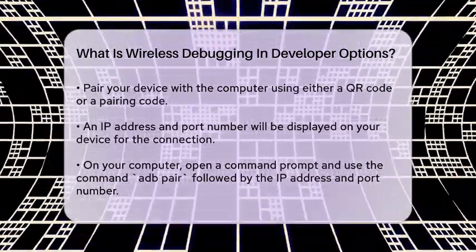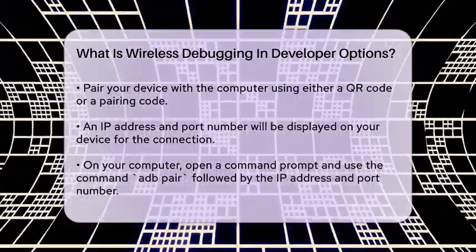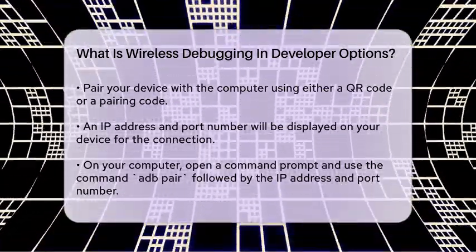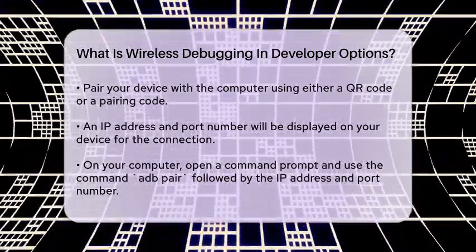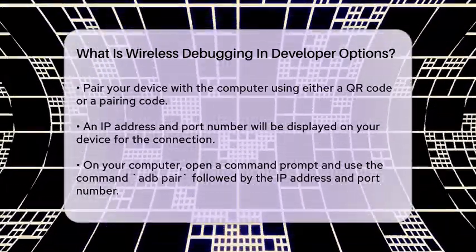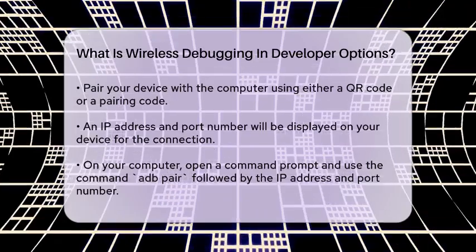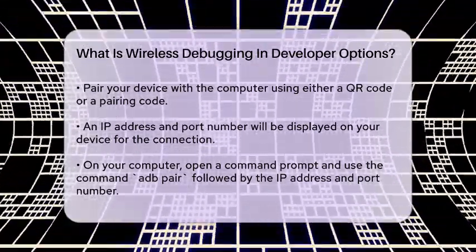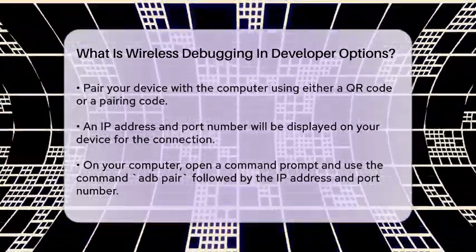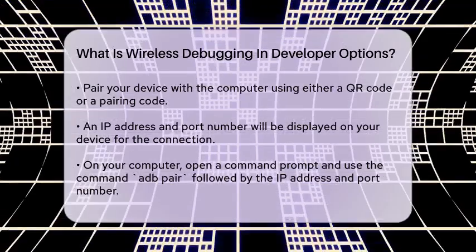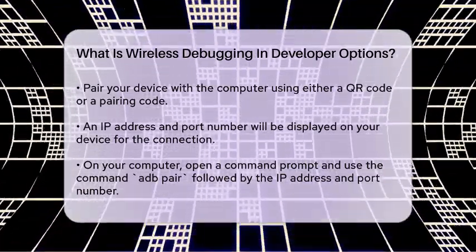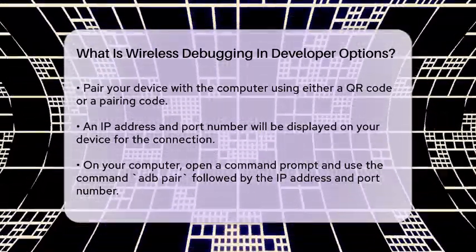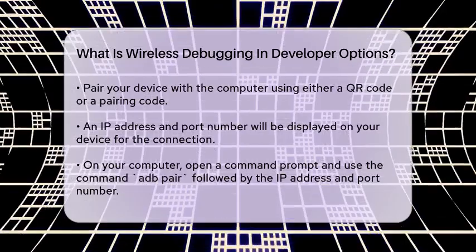To enable wireless debugging, go to the Developer Options menu and find the Wireless Debugging option. Tap the toggle to turn it on, and you'll see a prompt to allow the feature. Once enabled, you'll have the option to pair your device with your computer using either a QR code or a pairing code.